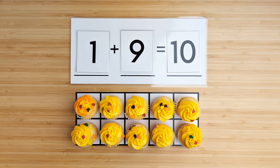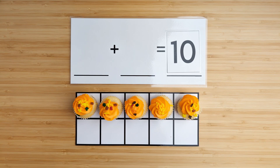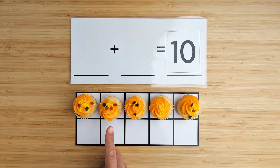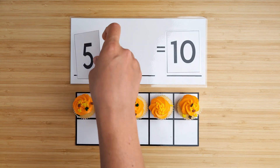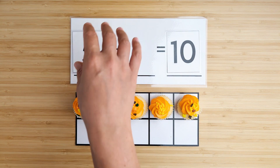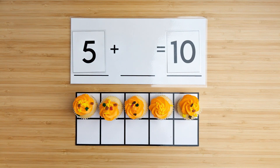Good job. Let's try another one. How many orange cupcakes are there? Let's count. One, two, three, four, five. There are five orange cupcakes. Can you guess how many yellow cupcakes there are?